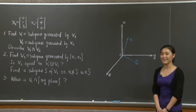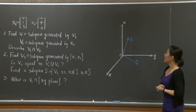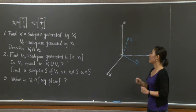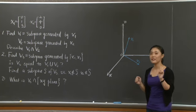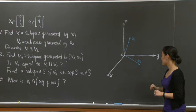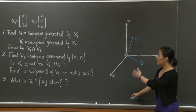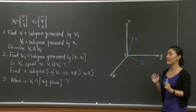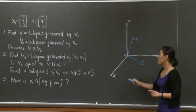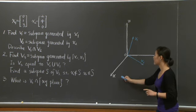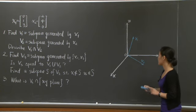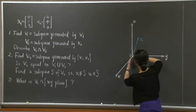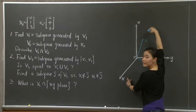How did your drawing go? Let's look at this together. First, we want to find the subspace generated by x1. Let's keep in mind the two conditions that a subspace has to satisfy. If I want to obtain a subspace, at least I have to be able to take any multiple of x1, which means at least I have to include the straight line that contains x1. So I'm going to extend x1 along both directions.